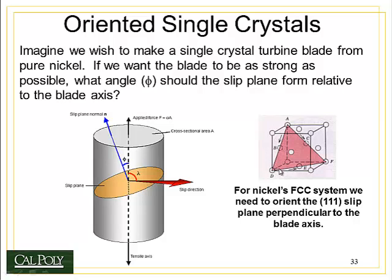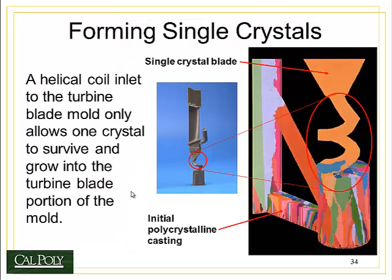For nickel, it has an FCC crystal, which means it's very easy for dislocations to move. But if I can orient the 1-1-1 plane — that's the Miller index 1-1-1 of that crystal — at an angle of zero degrees relative to the applied force, I can make movement on that plane very difficult. And that's exactly what we do. You might ask yourself, how in the world do you get a crystal to line up so the 1-1-1 plane is perpendicular to the slip direction?